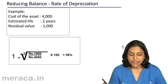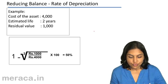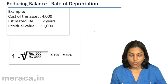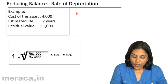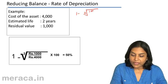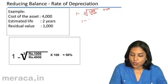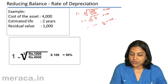For example, if the cost of the asset is 4,000, the estimated life is 2 years, and the residual value is 1,000, the rate of depreciation would be: 1 minus the square root of (1,000 / 4,000) × 100, which equals 1 minus the square root of (1/4) × 100, equal to 1 minus 1/2 × 100, equal to 50%.